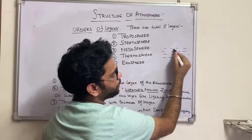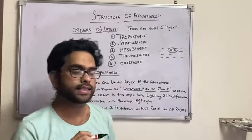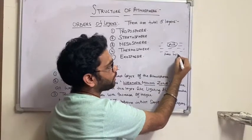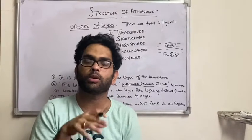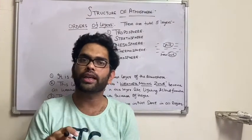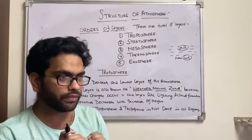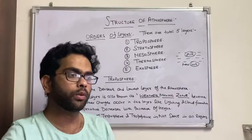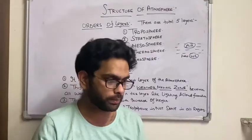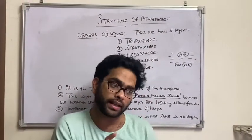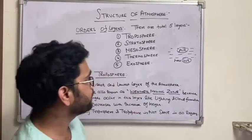Air has weight. Pressure is equal to weight upon area, or pressure is equal to force upon area. Air has its own weight, and that pressure is what we call atmospheric pressure. I hope you are clear with this.